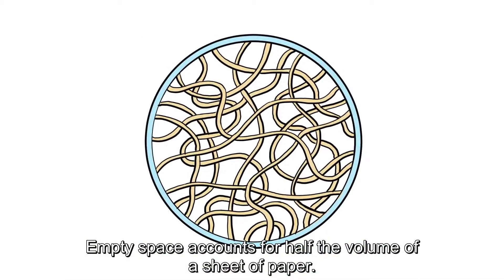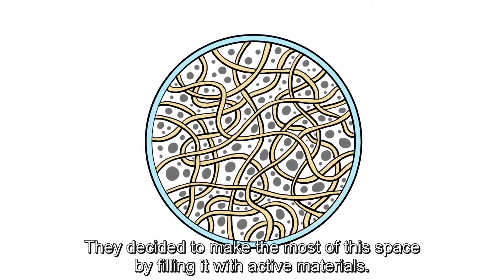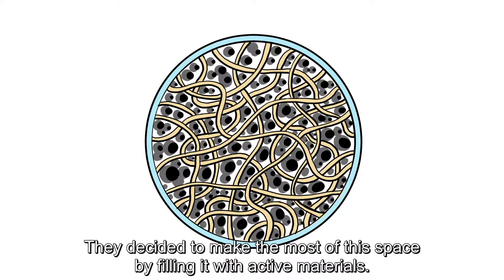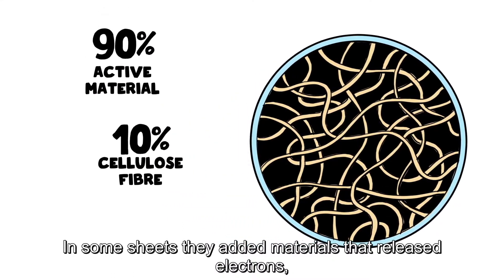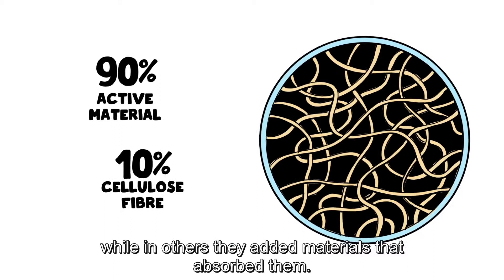Empty space accounts for half the volume of a sheet of paper. They decided to make the most of the space by filling it with active materials. In some sheets, they added materials that released electrons, while in others, they added materials that absorbed them.